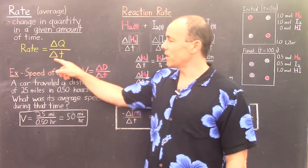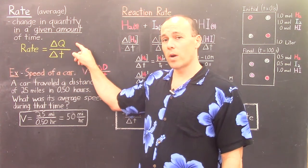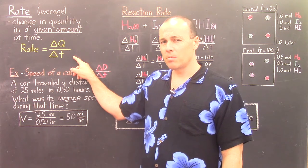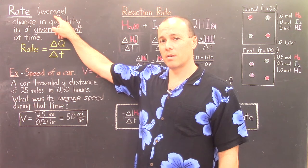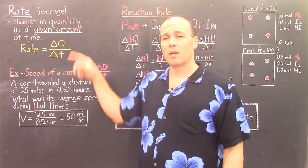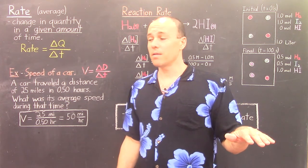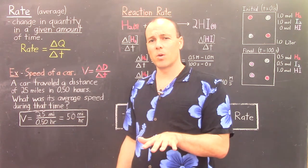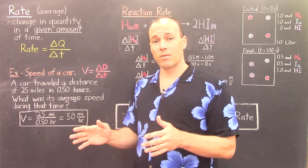Rate is calculated as rate equals ΔQ (change in quantity) over ΔT (change in time). It should be noted this is an average property being calculated, because it's over a given amount of time. Later on, we will discuss instantaneous rates and compare them with average rates, and we'll see how the two are similar yet somewhat different. But for now, let's focus on the average rate.